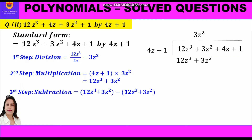We subtract by writing both in brackets with a minus sign in between. Opening the brackets and simplifying: 12z³ gets cancelled with minus 12z³, and 3z² gets cancelled with minus 3z², and we are left with zero.